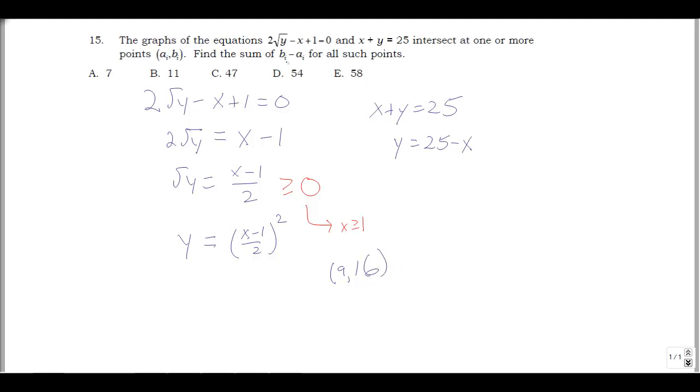And so what I get to do is b_i minus a_i. That's the y minus the x. That's 16 minus 9. That means our answer is 7. That's option A. And in some sense we're done.